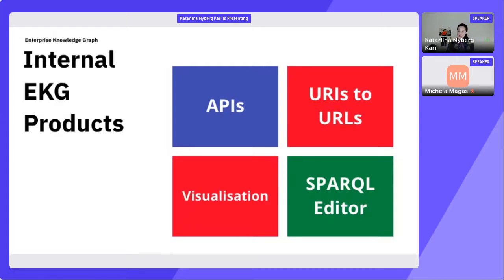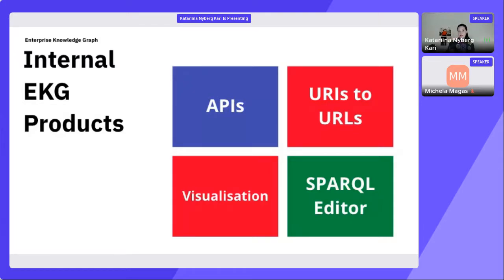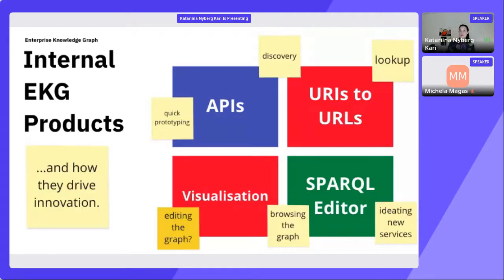A SPARQL editor is also important—it won't have huge reach inside an enterprise since SPARQL knowledge is only for the few. But Wikidata's SPARQL endpoint is a fantastic example: a visual UI for SPARQL queries with immediate entity previews that show what an entity is all about. That's very helpful for semantic-minded data engineers or ontologists working with the EKG. Let's look at how these tools drive innovation.